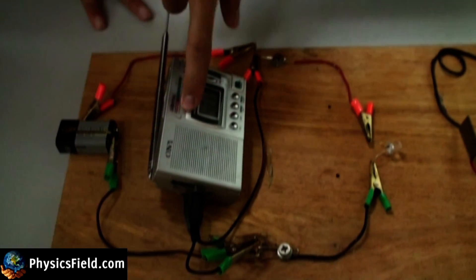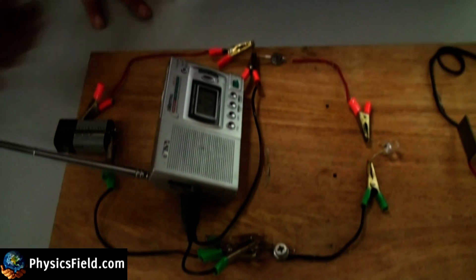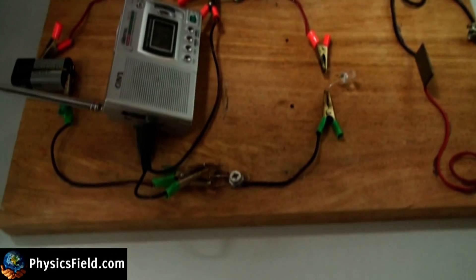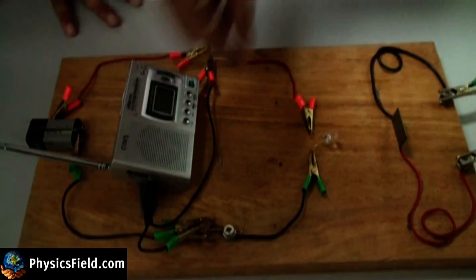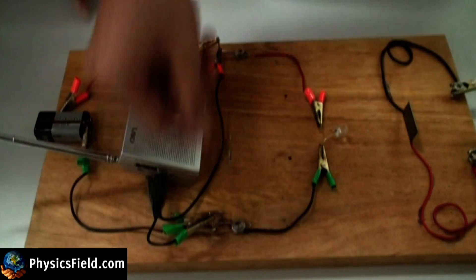And then this is the radio which has the antenna. And then these are the two pepper clips. I'm using these two pepper clips in order to connect these alligator clips.